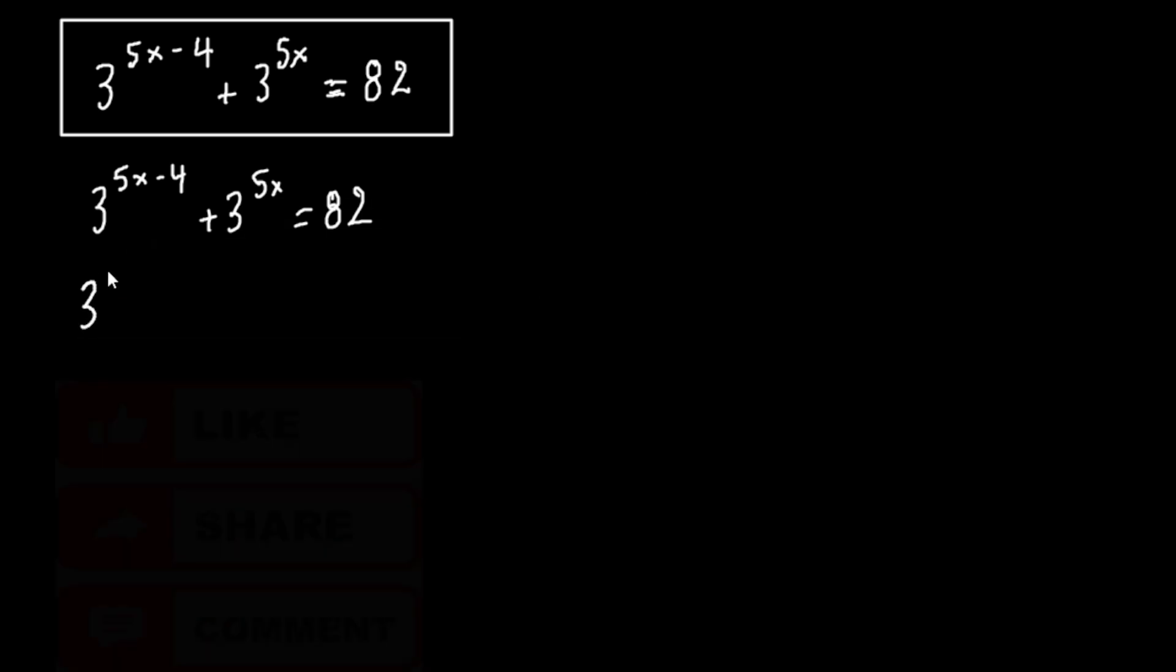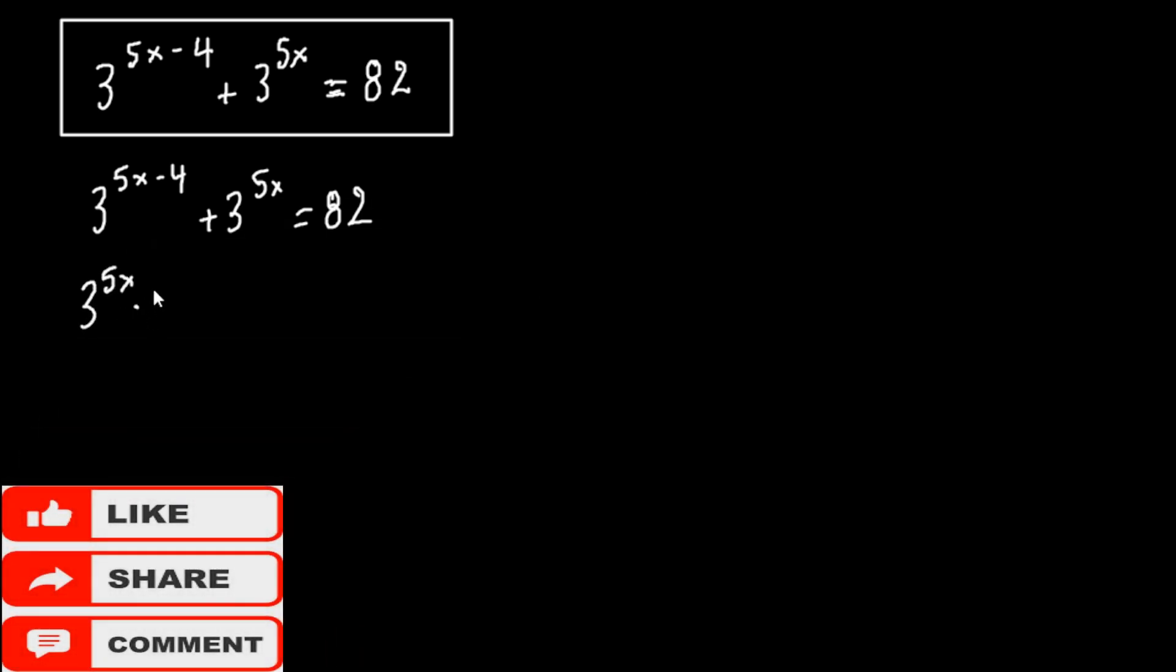We have 3 raised to the 5x times 3 to the minus 4 plus 3 to the 5x equals to 82.